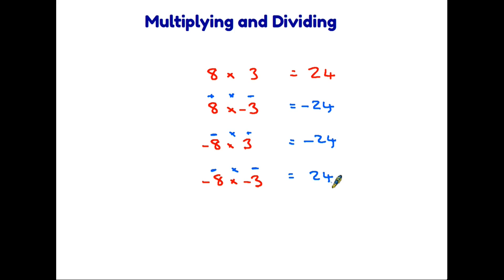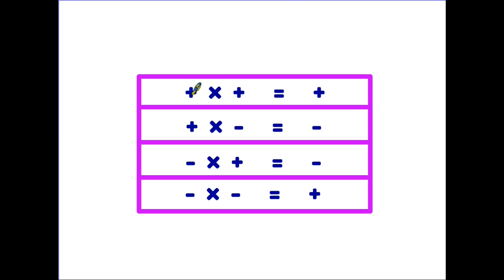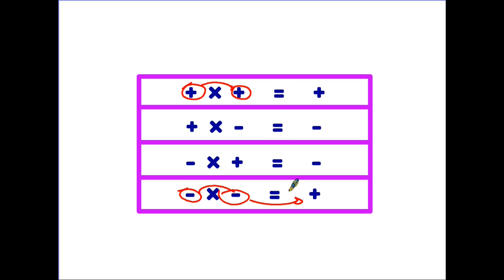Let's have a look at this in a table to help us memorize these rules. A plus multiplied by a plus is a plus. A plus times a minus comes out as a minus; minus times plus is similarly a minus; and two minuses are a plus. A good way to think of this: if the two symbols we are multiplying are the same — plus times plus, or minus times minus — we end up with a plus. If the two signs are different, no matter which way around, the answer is going to be a minus.